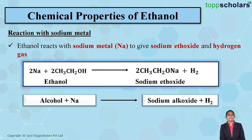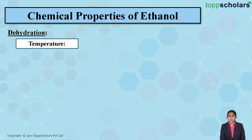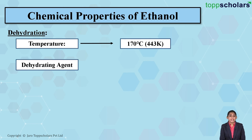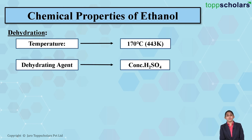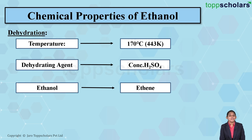The next reaction is the dehydration reaction. If you take ethanol and heat it at a temperature of about 170 degrees Celsius, that is 443 Kelvin, using a dehydrating agent such as concentrated sulfuric acid, ethanol gets converted into ethene — that is, ethanol gets converted into an unsaturated compound. This is dehydration: there is removal of a water molecule.